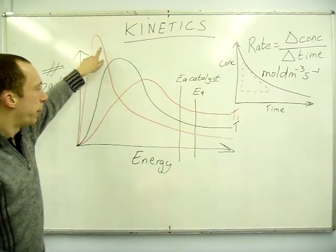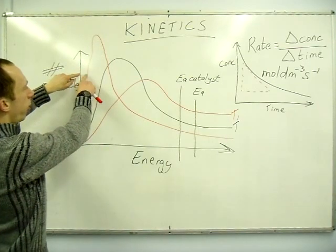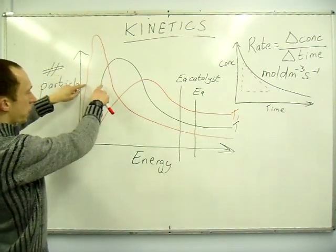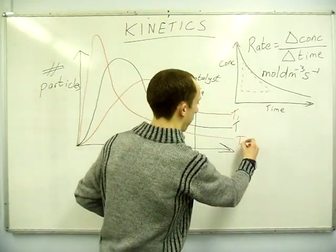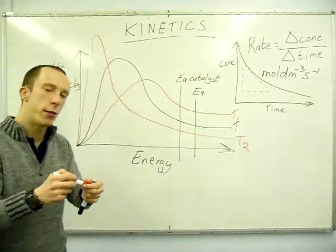So notice the actual peak height has risen with a lower temperature, but it's quickly dropped down. So wherever I draw a line across to actually touch these, the red line in the T2 case would be lower than the original temperature.